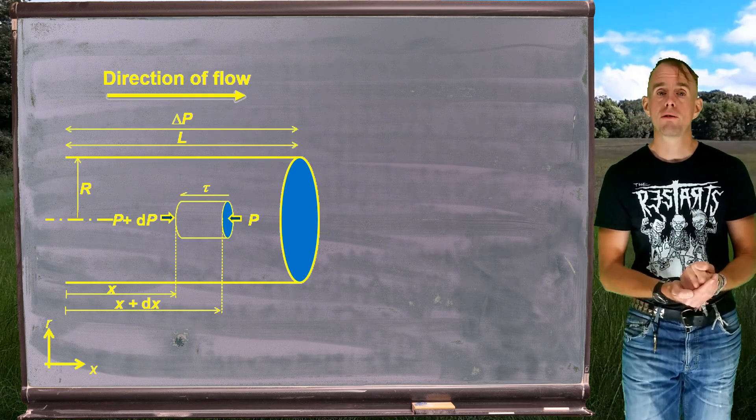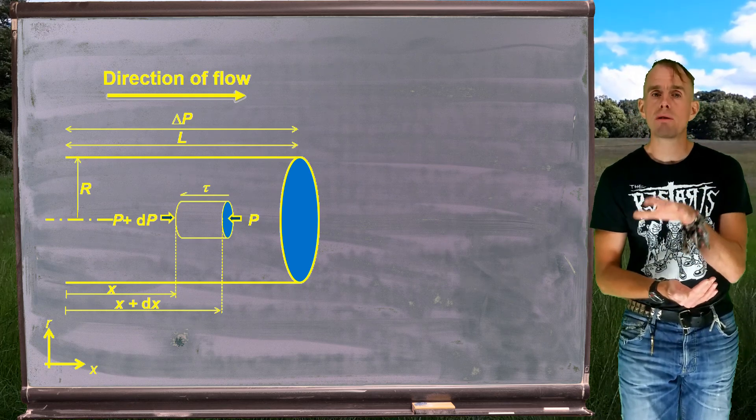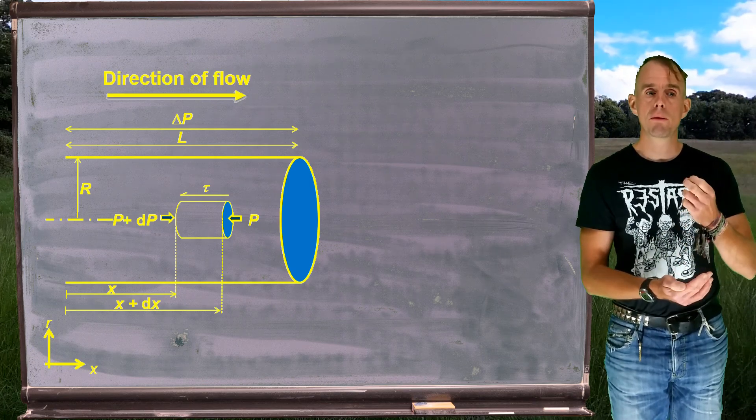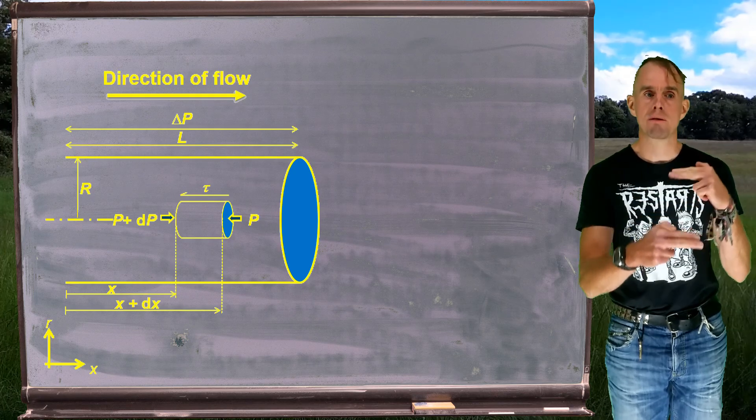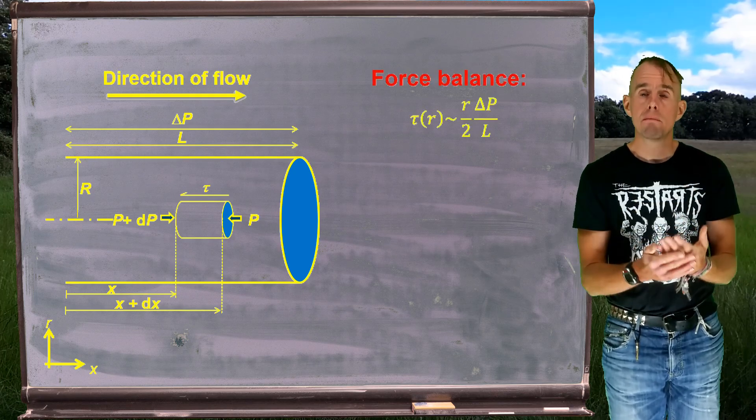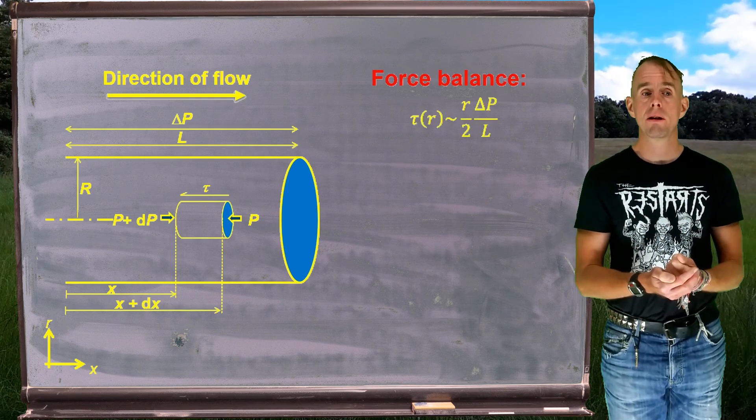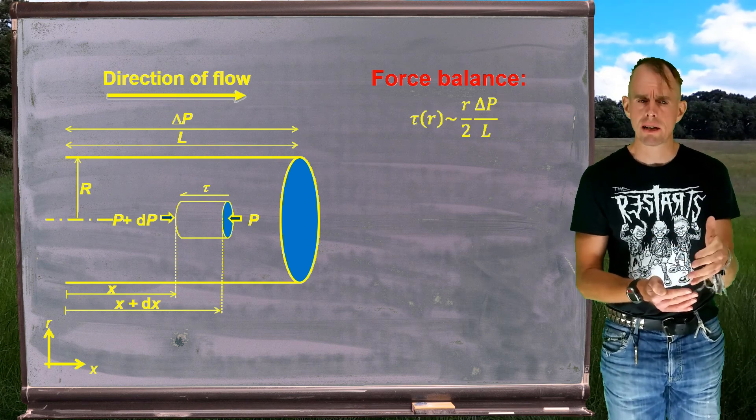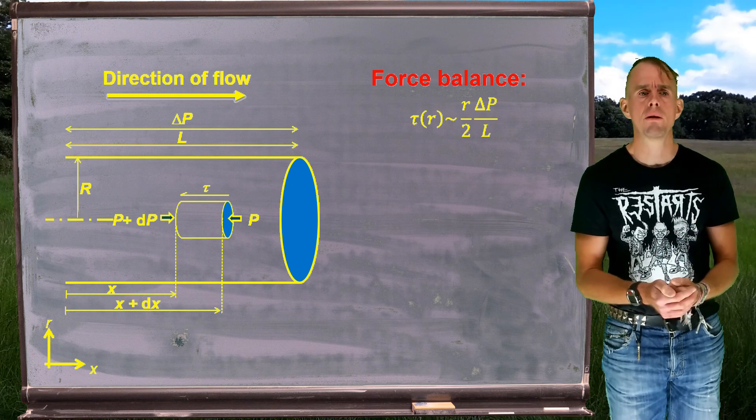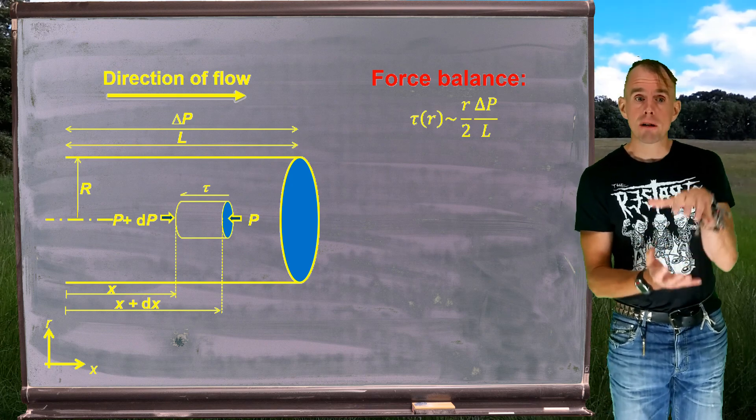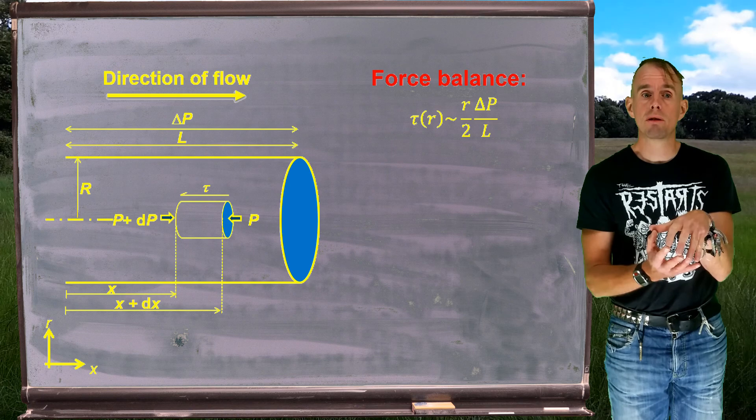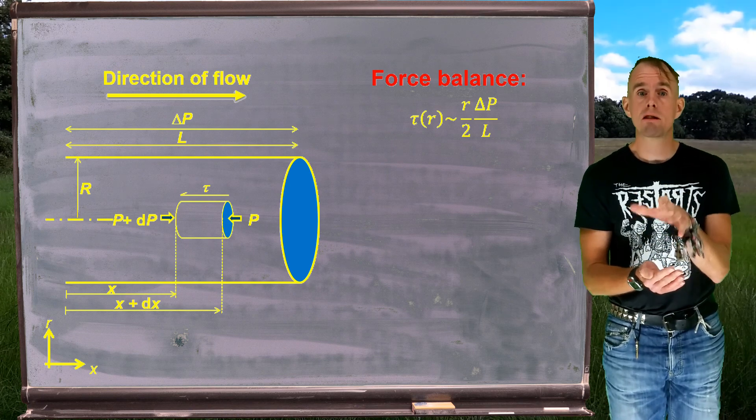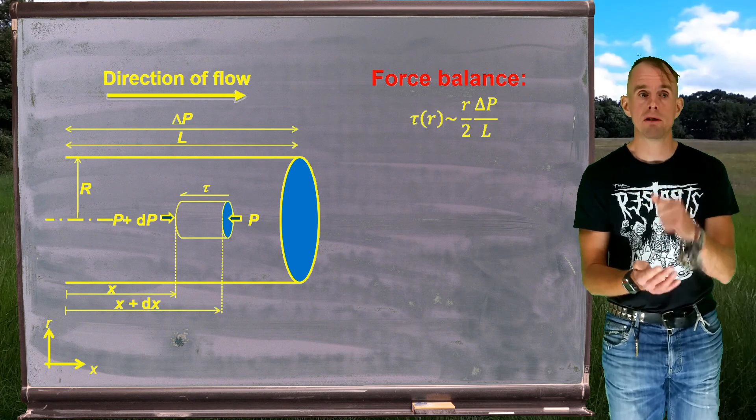We've seen how to do this force balance before, so we're not going to go through all of that force balance again. We'll jump straight to the result, which is that we know that that shear stress around the periphery, and again, if we were to be particular, we would say this is on the radial face acting in the z direction, so tau_rz strictly, we'll just call it tau for now, is going to be a function of radius, and it's equal to little r, which is a radius of my element that I'm examining, over 2 delta p over L, which is my pressure drop per unit length.